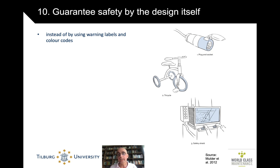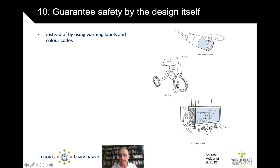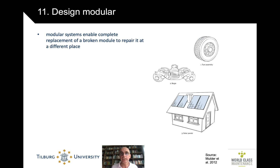A deep but very practical insight: make sure the design is safe by its very design. For example, it's impossible to reach the live wires in a certain plug-and-socket combination — you have to do it safely or it doesn't work. A tricycle is very difficult to fall off while riding. A safety shield requires you to first close the screen, then manipulate buttons with two hands, and only when the design confirms you are in a safe position can you start working the machine. Safety is built into the design itself.